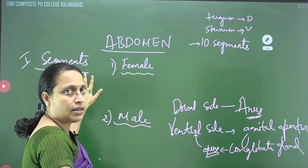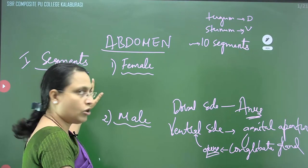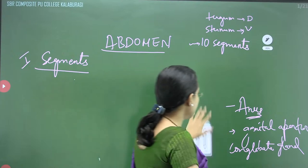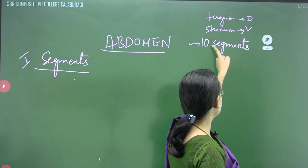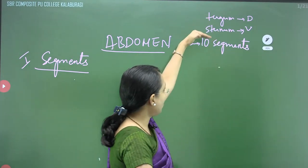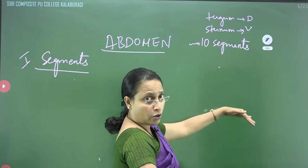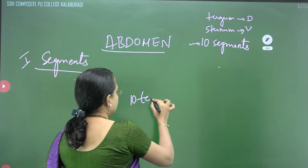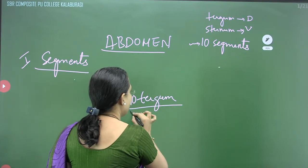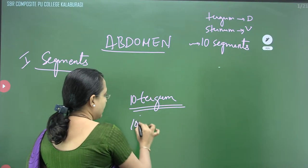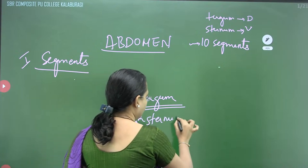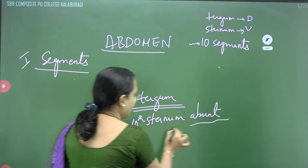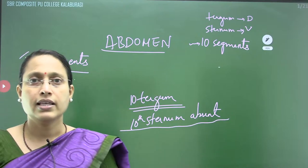This was about the genital chambers formed by the segments, and which segments appear in male versus female. Lastly, how many terga are present? Total segments in both male and female is 10, so there are 10 terga. However, the 10th sternum is absent — sternum is only present up to the 9th abdominal segment. These terga and sterna are scleroids.